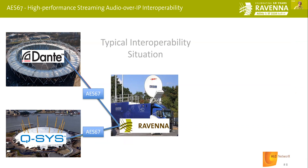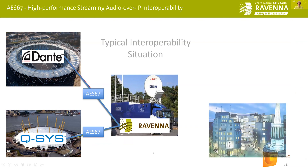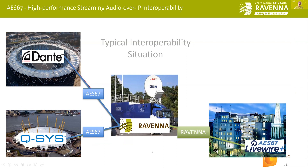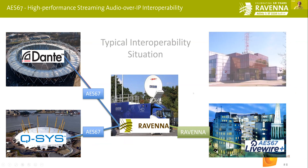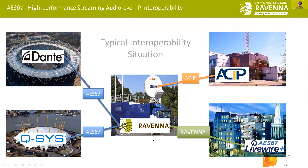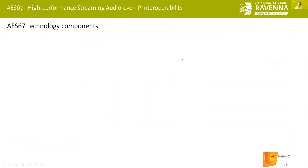Here's another illustration of a typical interoperability problem AES67 can solve. Assume we have two venues running different network technologies and an OB van pulling up running Ravenna. The problem is if you want to connect directly to the venues, it doesn't work because there's no direct interoperability between the three networking schemes. In the very moment AES67 is supported by these networking technologies, you can immediately interchange signals based on IP.